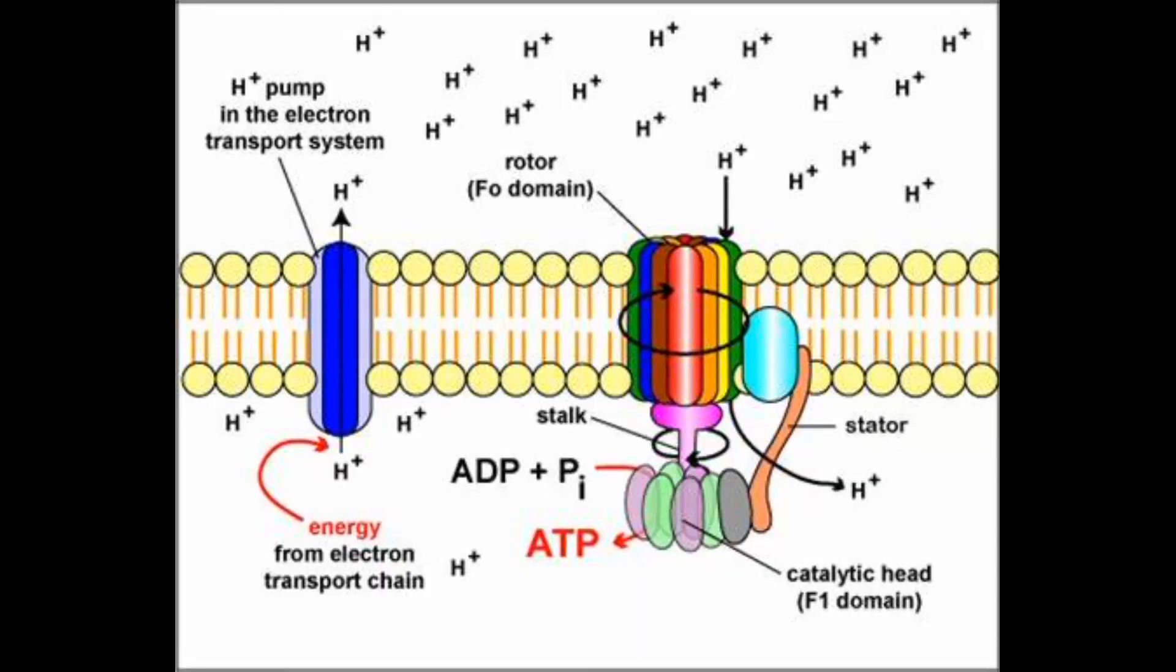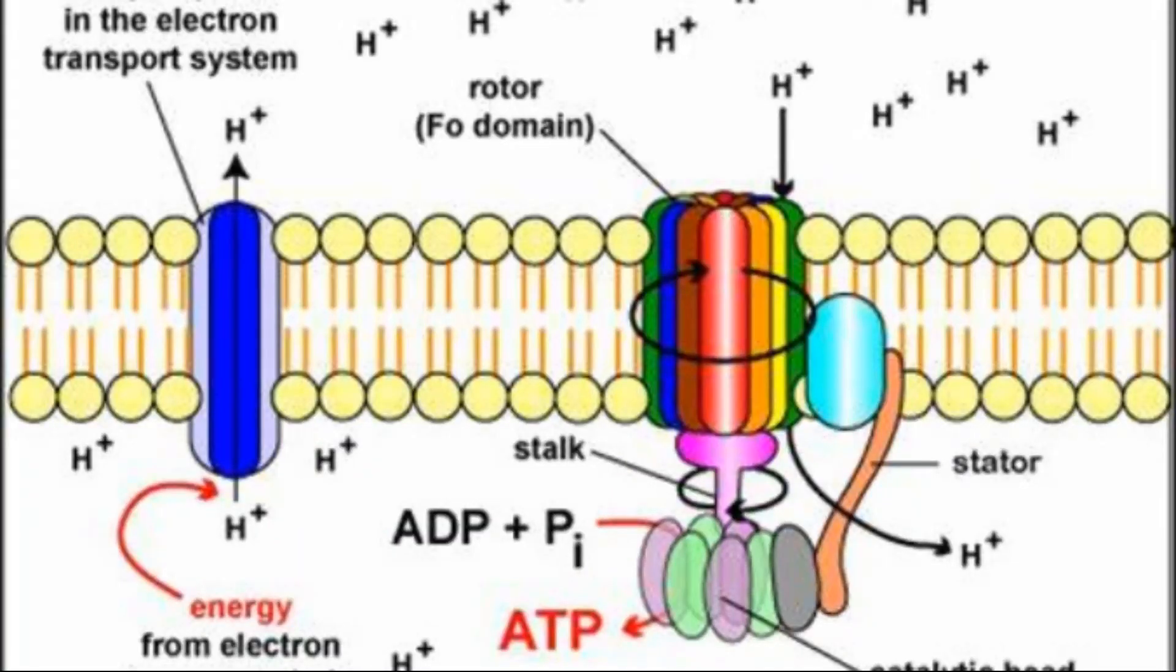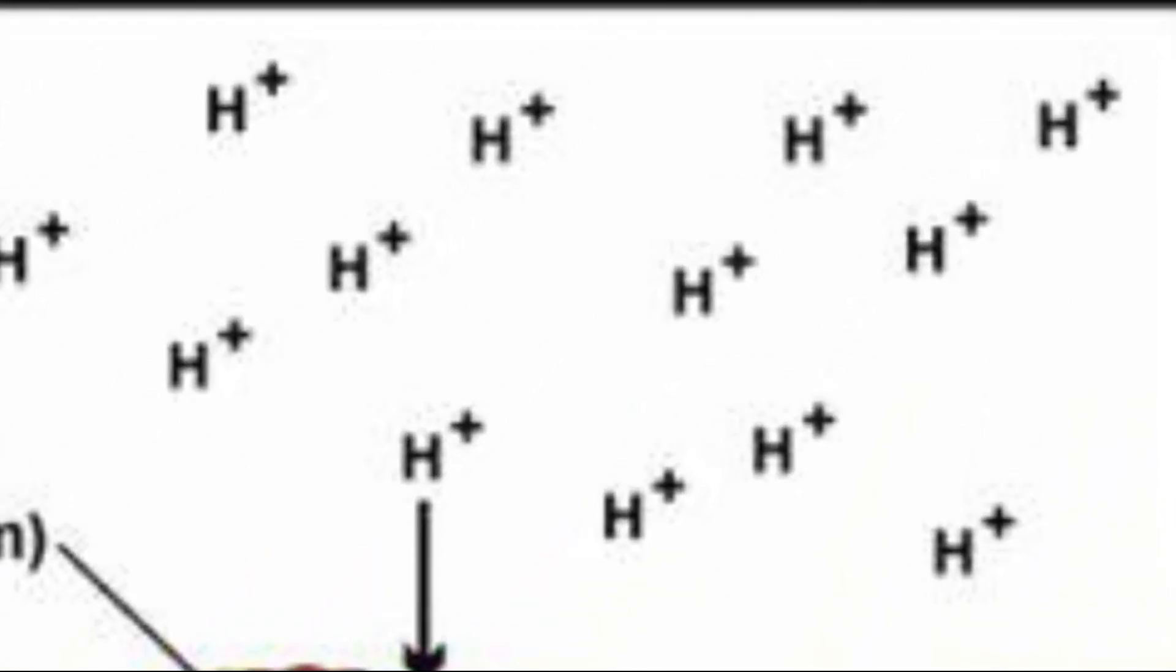There is something called the chemiosmotic hypothesis or theory, also known as Mitchell's hypothesis or Mitchell's theory. It explains how the free energy generated by the transport of electrons by the chain is used to produce ATP from ADP and inorganic phosphate. The electron transport is coupled to the phosphorylation of ADP by the pumping of protons, which are hydrogen ions, across the inner mitochondrial membrane to the intermembrane space at complexes 1, 3, and 4. This process creates an electrical gradient with more positive charges on the outside of the membrane than on the inside, as you can see in the picture, and generates a pH gradient as well. The outside of the membrane is at a lower pH than the inside.